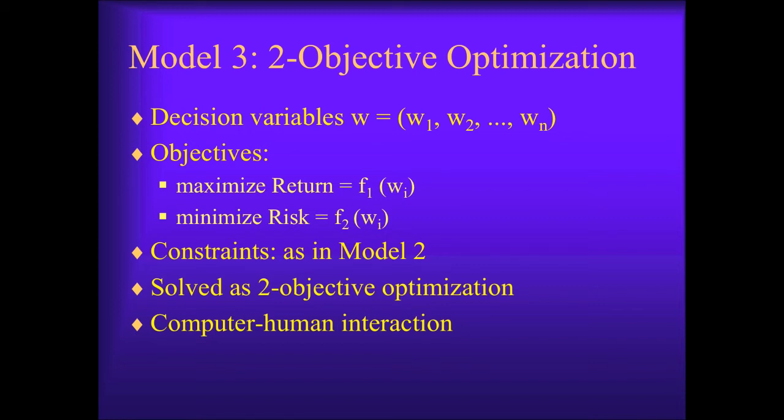Model 3 is harder to solve than Model 2. First, one has to solve the problem as a genuine two-objective optimization problem. Then, presenting to the investor the full set of non-dominating solutions could only confuse them. One has to decide how to interact with the investor in order to help them refine their choices.